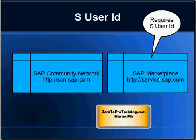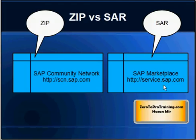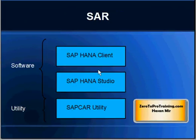If you have Marketplace access you can download the files there — in that case you will actually need three files, which I will explain shortly. Anybody can create an account at SAP Community Network with no special IDs and no prerequisite to purchase anything from SAP. If you download from Community Network, files will have ZIP extensions and can be unzipped with any zip utility. If you download from Marketplace, files will have SAR extensions and can only be unzipped using a special proprietary SAP utility called SAP CAR utility.